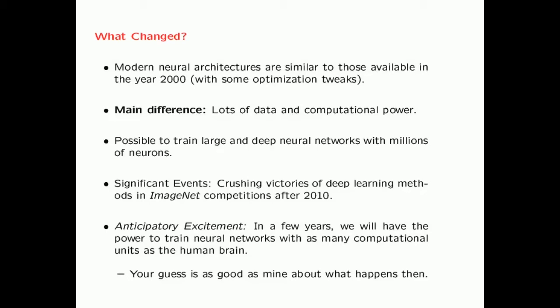What made modern neural networks so popular as they are today? The main difference today is that we have lots of data and lots of computational power, and it is possible to train large and deep networks with millions of neurons. Almost the same architectures that were proposed in the year 2000, with a few optimization tweaks and with increased size, when trained today, have achieved crushing victories in deep learning competitions such as ImageNet. This has led to anticipatory excitement that data availability and computational power will only continue to grow. The question is: in a few years, when we are able to train neural networks with as many computational units as a human brain, what is going to happen?